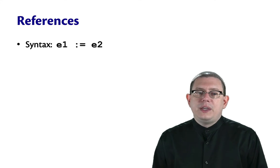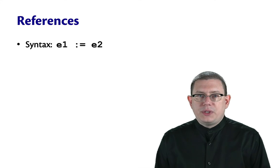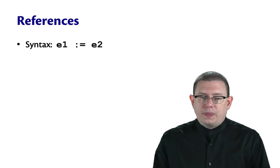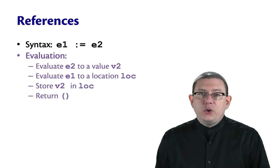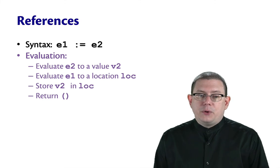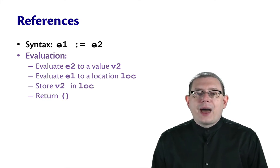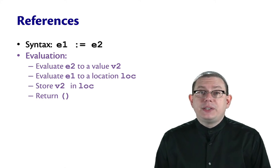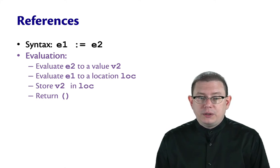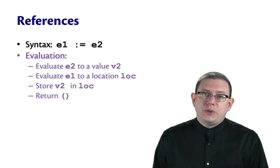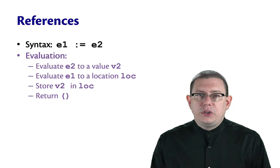The assignment operator is written E1 colon equals E2. To evaluate such an assignment, first evaluate E2 to a value V2. Then evaluate E1, it must produce a location loc and store V2 in that location. And as the result of the assignment, return unit.